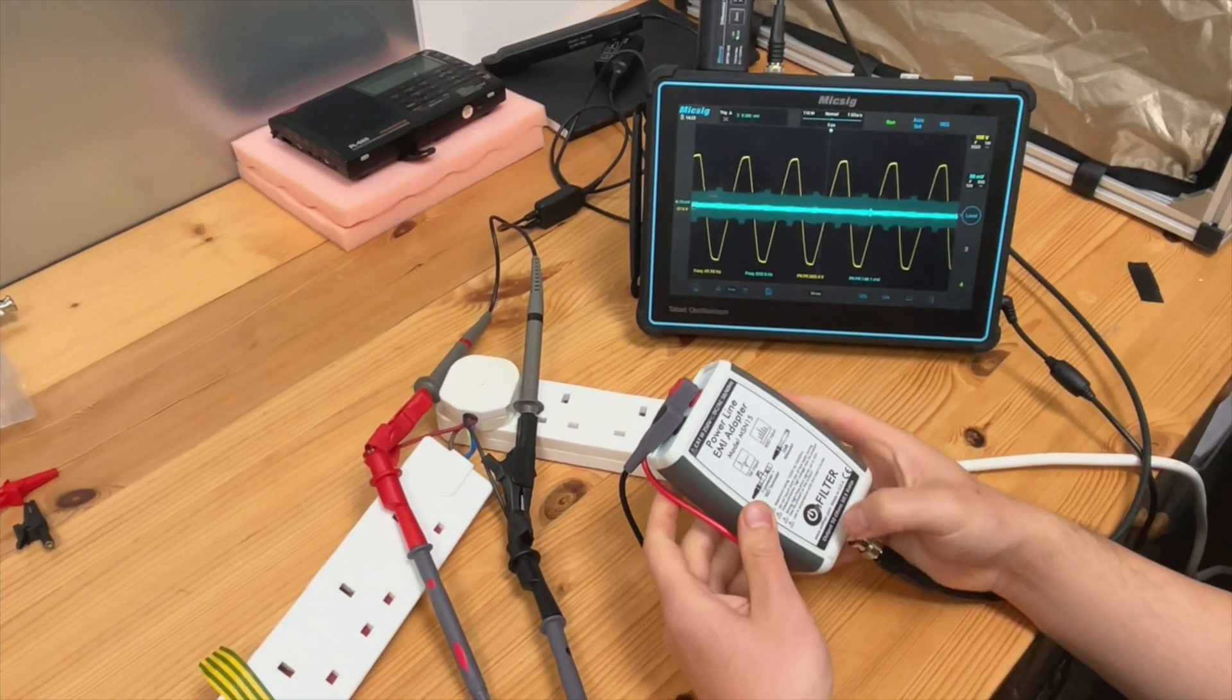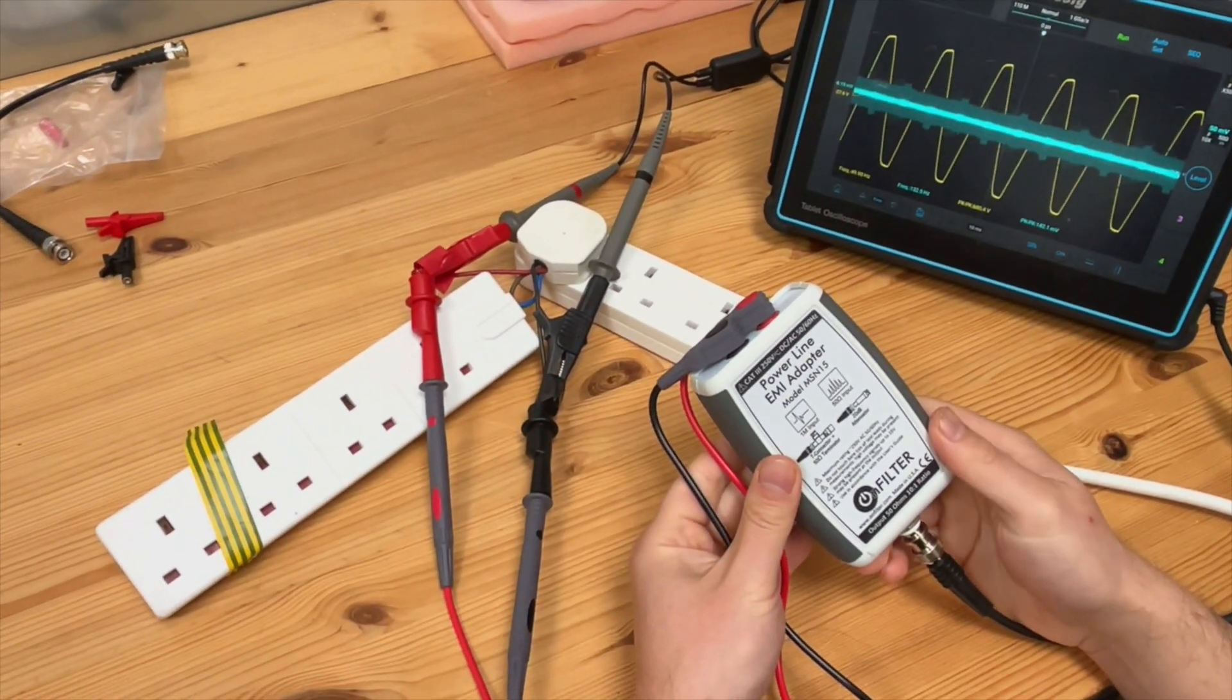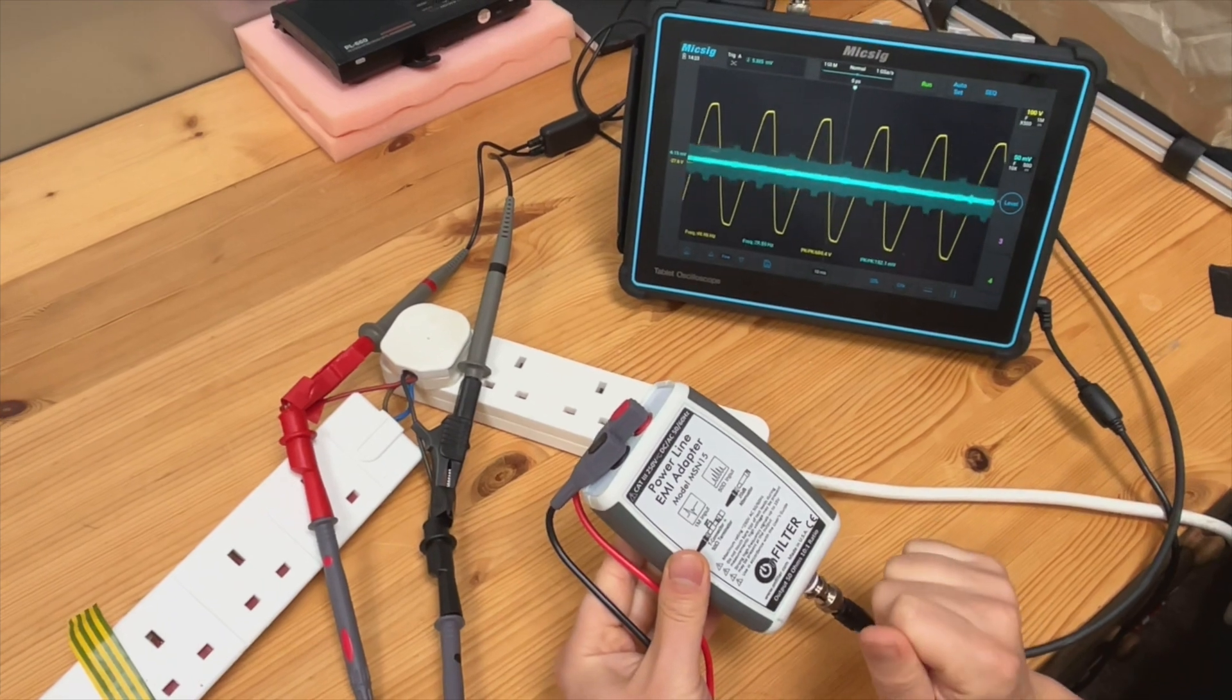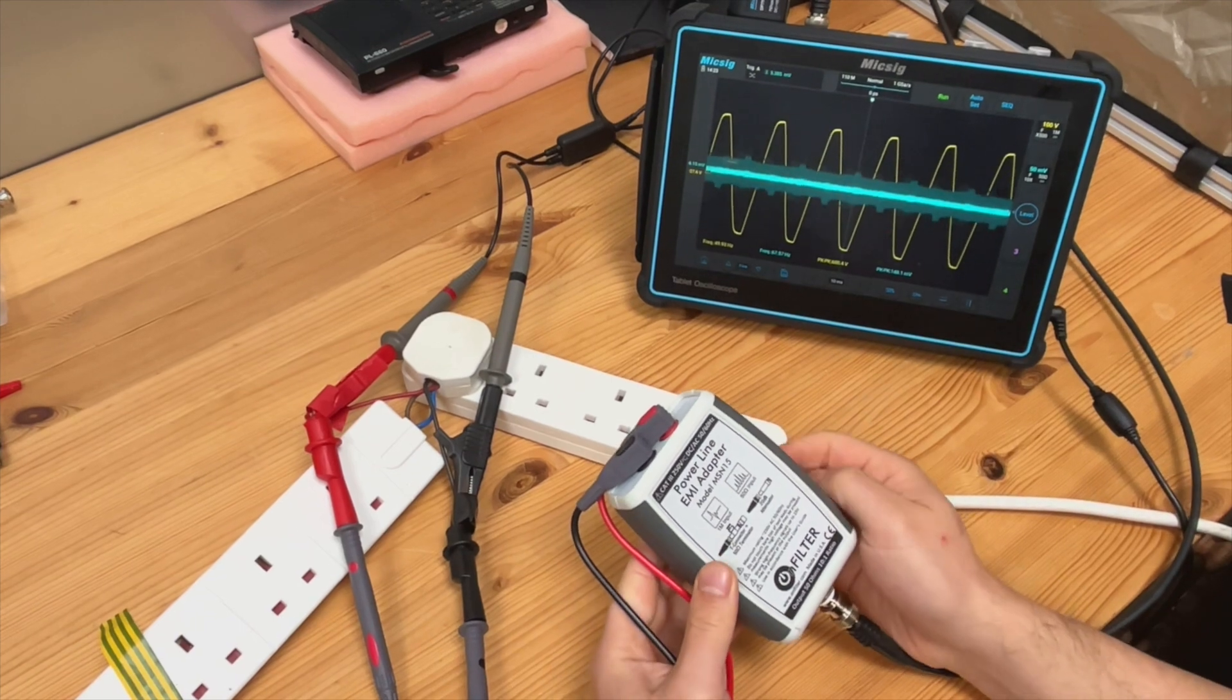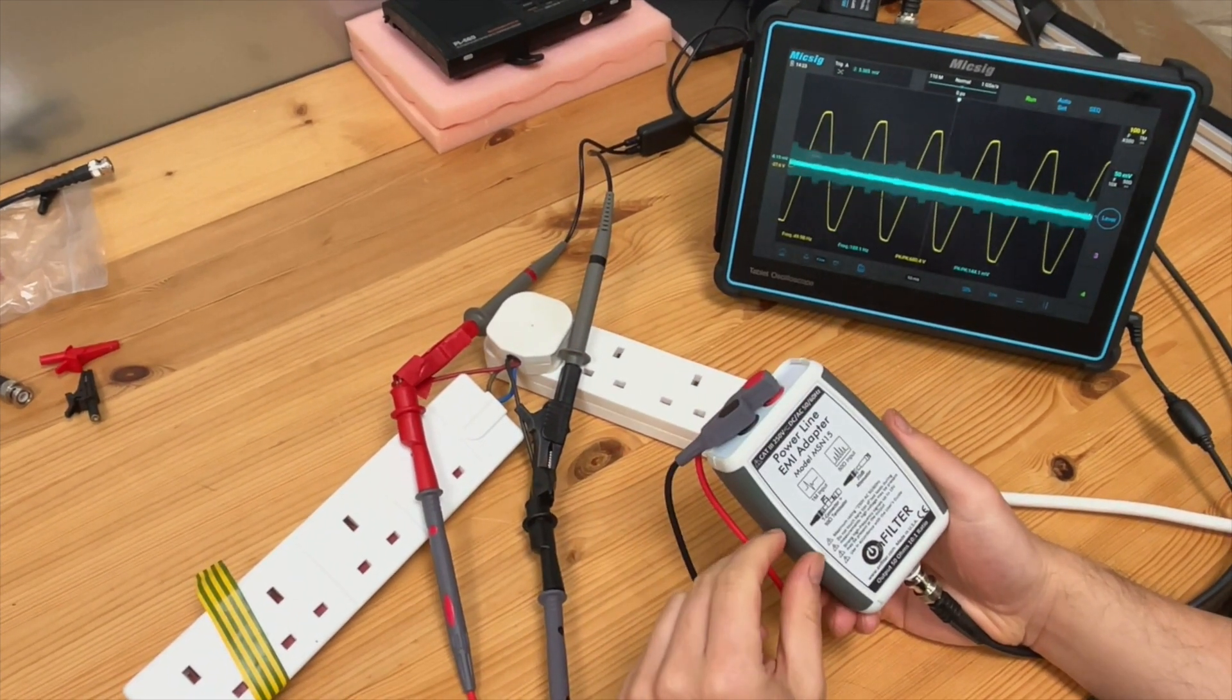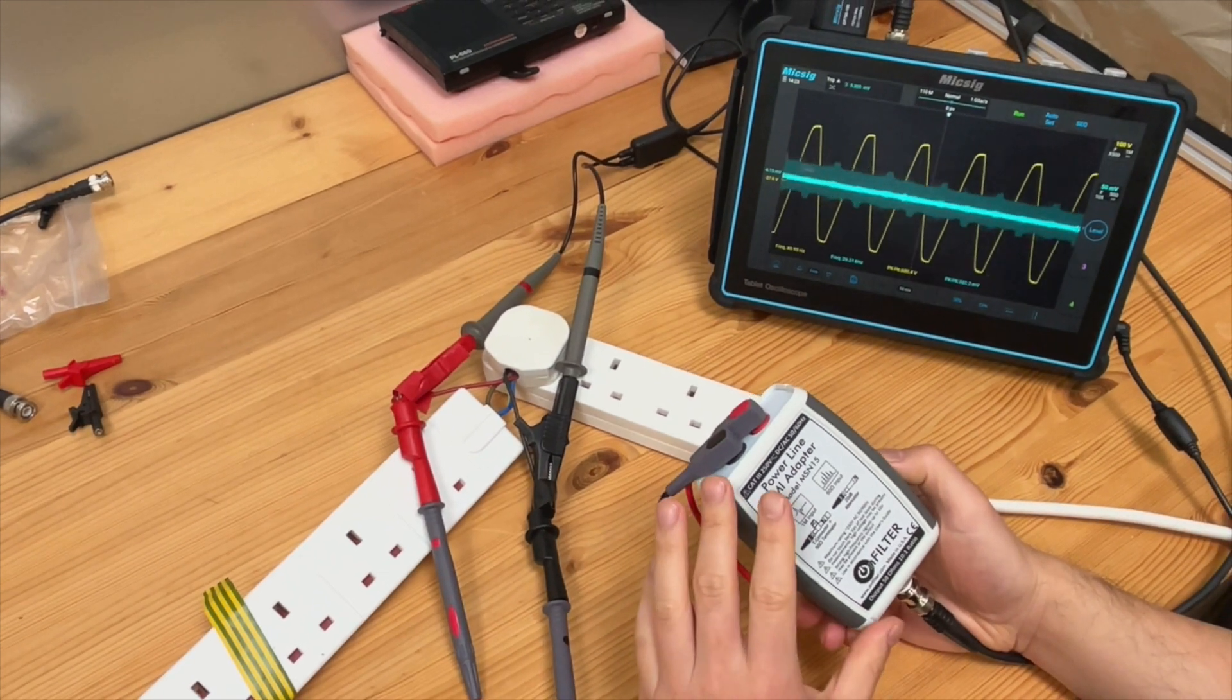As you can see, this is the OnFilter EMI adapter MSN15. In this case, we connected the output of this one to an oscilloscope using the 50 ohm input. Channel two currently is connected to 50 ohm. If you check the data sheet, this one actually works from 30 kilohertz all the way up to hundreds of megahertz. Therefore, it won't show you the DC contents or very low frequency content.